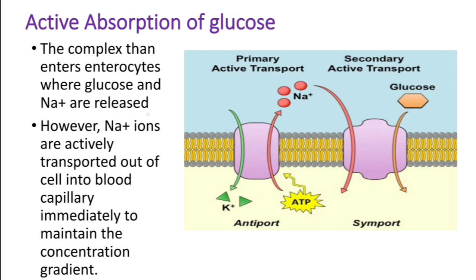The complex — carrier translocases along with glucose and sodium — enters the enterocytes, where glucose and sodium are released. However, sodium ions are actively transported out of the cell into the blood capillary immediately, so as to maintain the concentration gradient. The carrier system in which molecules are transferred in the same direction is called symport, whereas if molecules are carried in different directions it is called antiport.